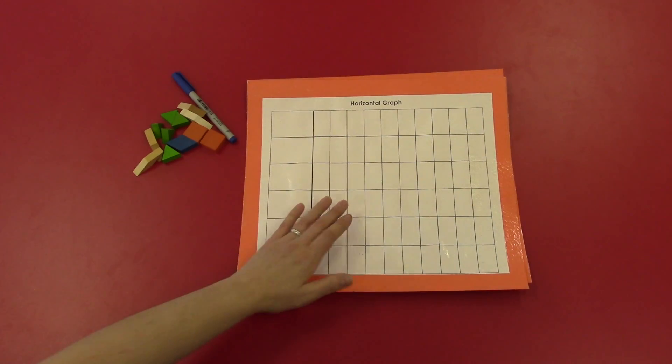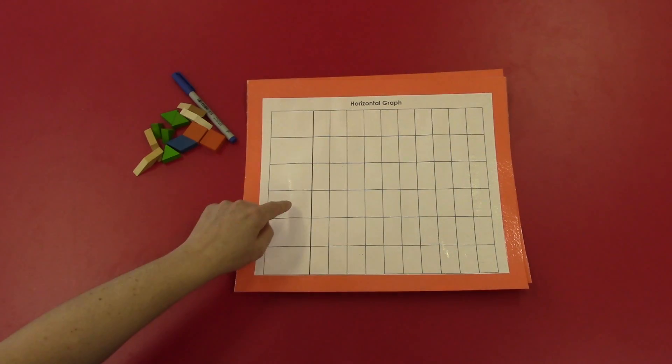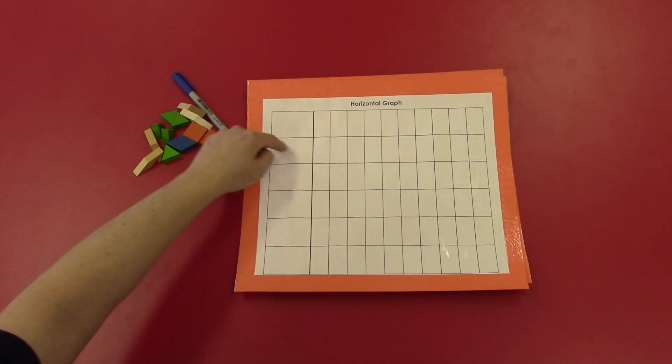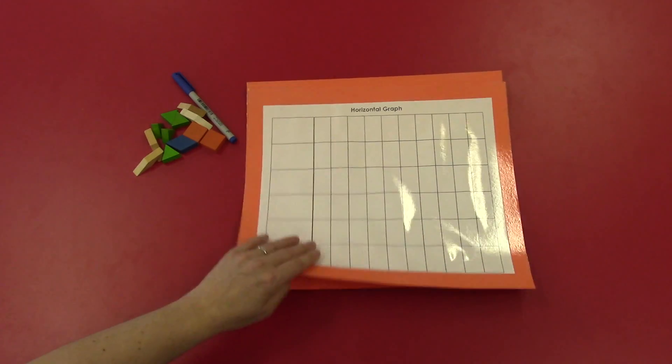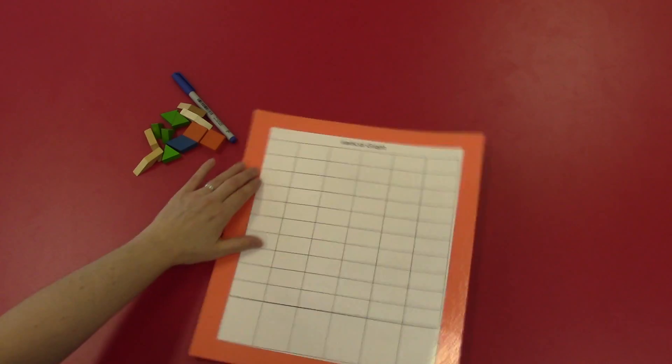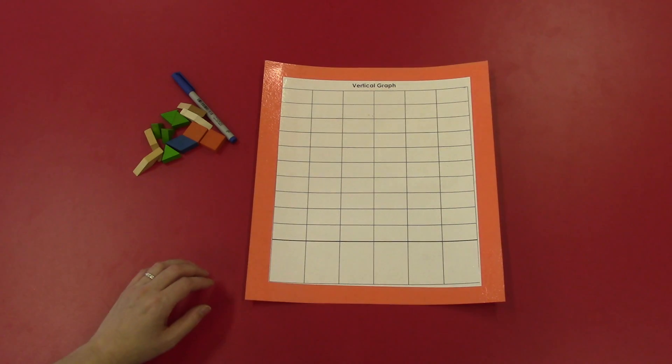We can do two types of graphs. We could do a horizontal graph where our rows are going to be where we're graphing the information, or we could use a vertical graph where we're going to use the columns to graph our information. I'm going to use a vertical graph for this.